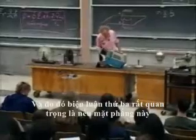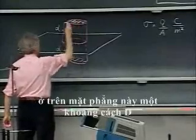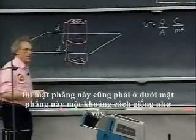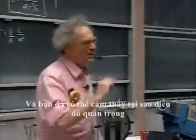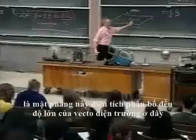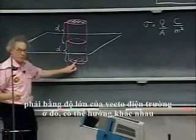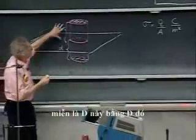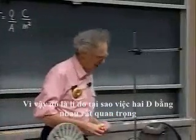The third argument, which is very important, is that this flat surface is a distance d above the plane and that this flat surface is exactly the same distance below the plane. You can already sense why that is important: if you ever want to use a symmetry argument, if this plane is uniformly charged, the electric field vector here in magnitude must be the same as there in magnitude — as long as this d is the same as that d. That's why it's important that the two d's are equal.